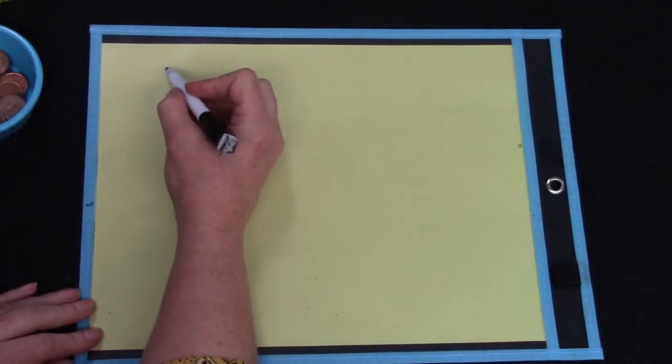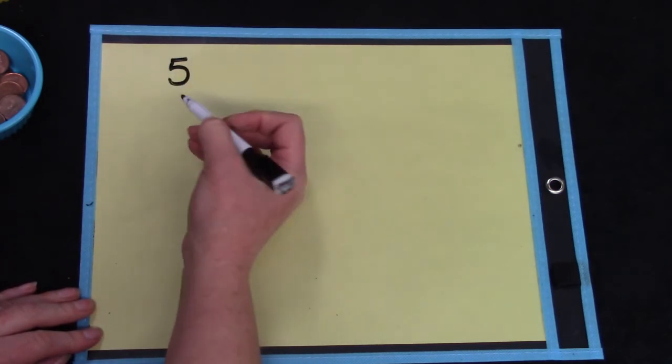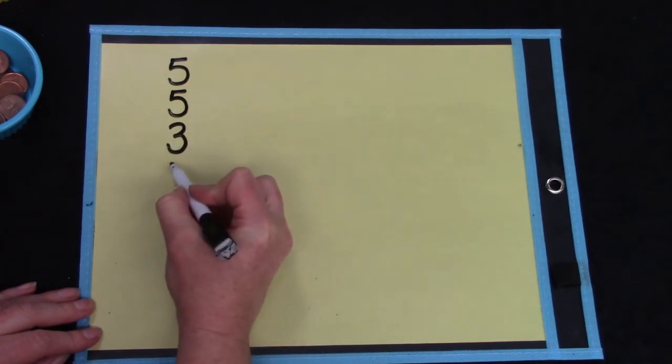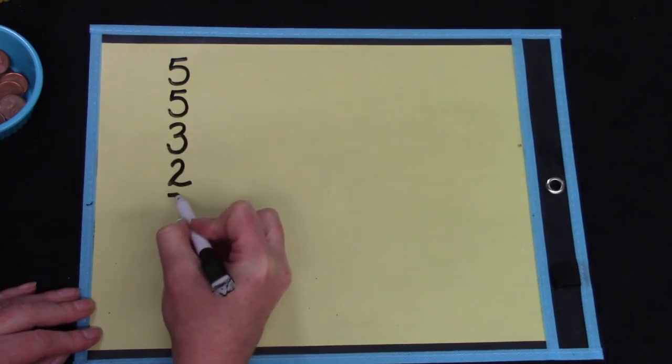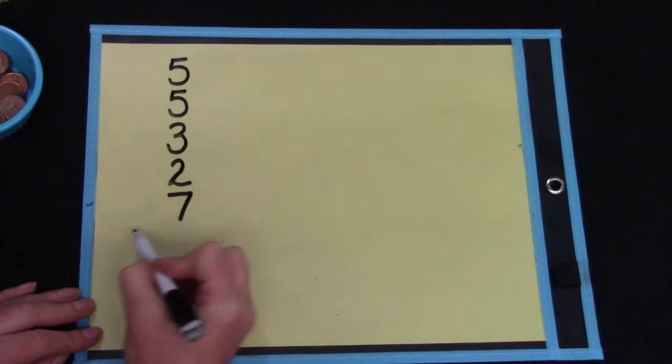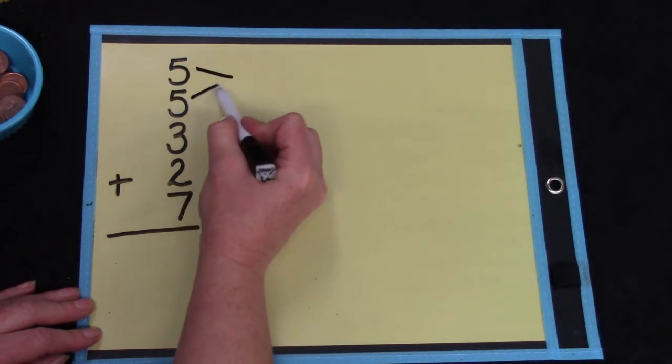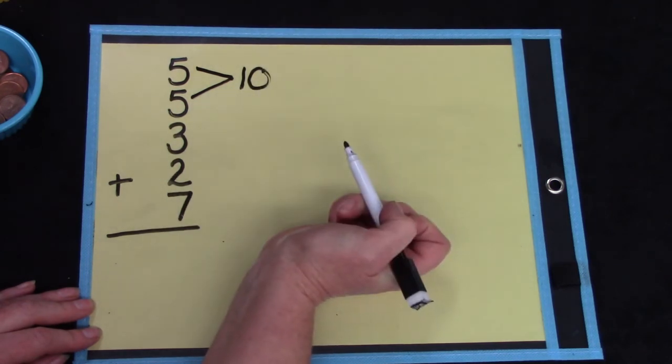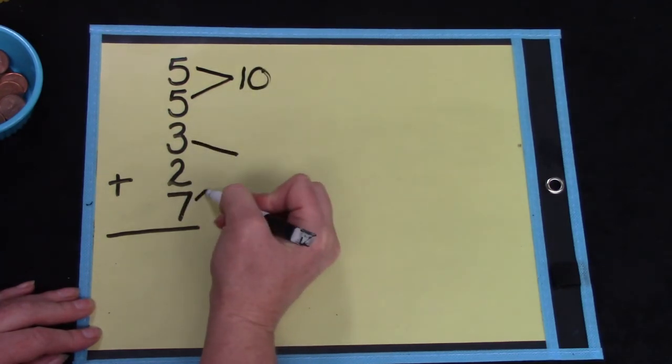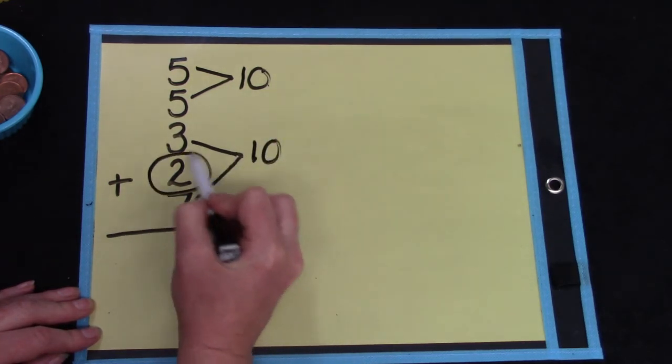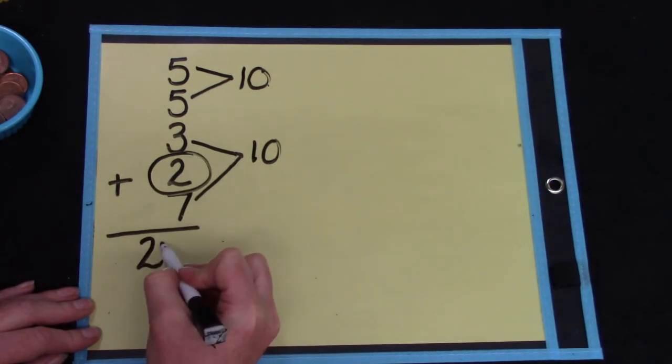What if our question said five plus five plus three plus two plus seven? Could we add all of those numbers together? Well, I want you to look and see which numbers go together. There's an easy pair right here. Five plus five equals ten. Here's another pair. Three plus seven equals ten. We have ten, twenty, and the two, twenty-two.